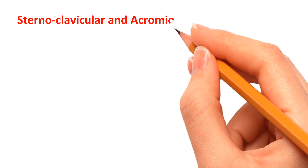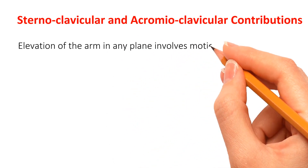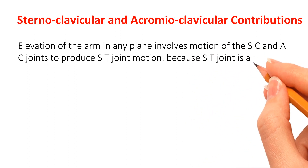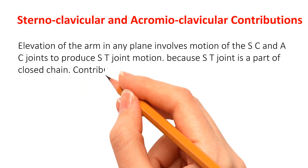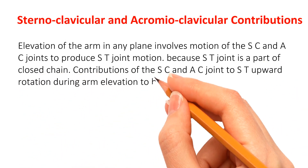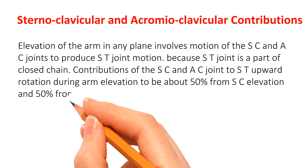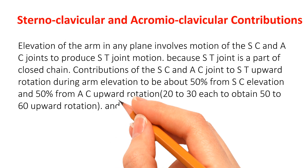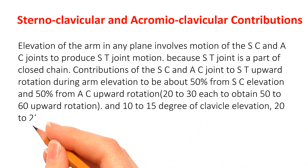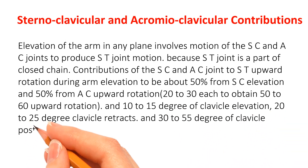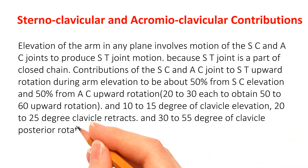Now, sternoclavicular and acromioclavicular contributions. Elevation of the arm in any plane involves motion of the SC and AC joints to produce ST joint motion, because the ST joint is part of a closed chain. Contributions of the SC and AC joints to ST upward rotation during arm elevation are about 50% from SC elevation and 50% from AC upward rotation — 20 to 30 degrees each to obtain 50 to 60 degrees of upward rotation. Additionally, there is 10 to 15 degrees of clavicle elevation, 20 to 25 degrees of clavicle retraction, and 30 to 55 degrees of clavicle posterior rotation.